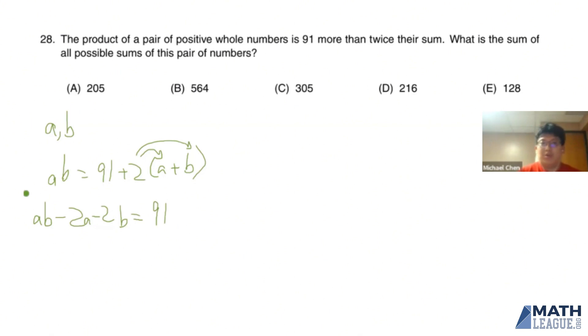Now looking at this, we want to find all possible values of A and B. And what we're going to do is something that's called Simon's favorite factoring trick or SFFT. And what we're going to utilize this method for is to turn the left-hand side into a product of two binomials.